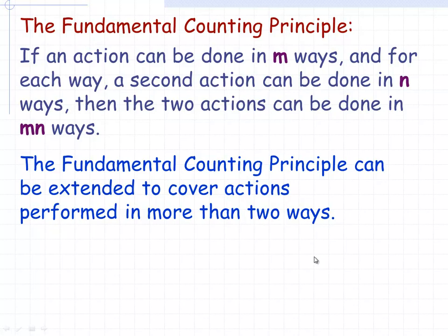The fundamental counting principle says this: if an action can be performed in M ways — for example, selecting the lunch's main course in two ways — and for each way a second action can be done in N ways — for example picking the dessert in five different ways — then the two actions can be done in M times N ways. So we multiply M by N to get how many ways the whole thing can be accomplished.